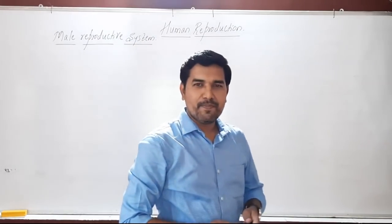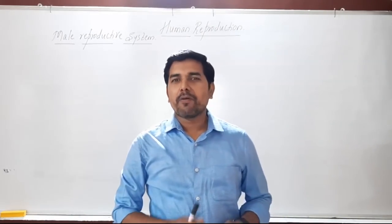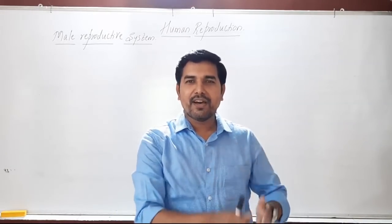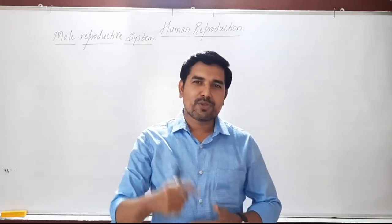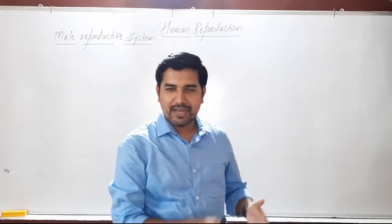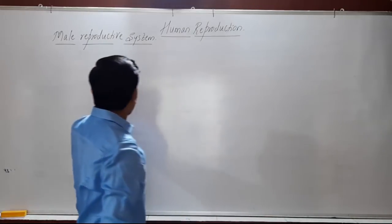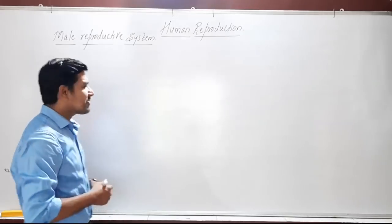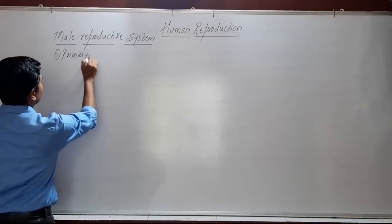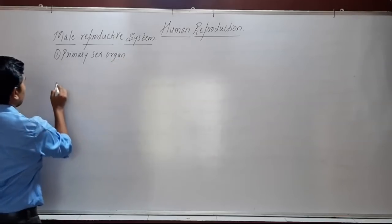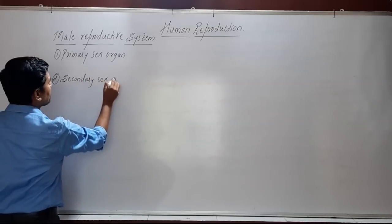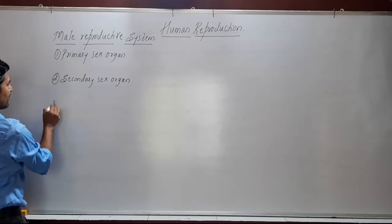In the male reproductive system we come across primary sex organs, secondary sex organs, and accessory glands. These help in the formation of gametes, transfer of gametes, and finally help carry out fertilization through the gestation period until parturition. The male reproductive system is divided into: first, primary sex organs; second, secondary sex organs; and third, accessory glands.